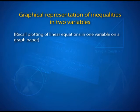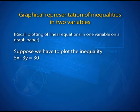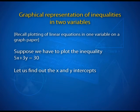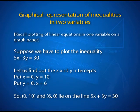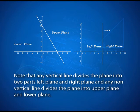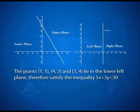Now let us represent linear inequalities in two variables graphically. Recall plotting a linear equation on a graph. For the equation 5x + 3y = 30, we find the x and y intercepts: when x = 0, y = 10; when y = 0, x = 6. So the points (0, 10) and (6, 0) lie on the line. Any vertical line divides the plane into a left and right part; any non-vertical line divides it into an upper and lower part. Considering points (1,1), (4,2), and (3,4), these lie in the lower left plane and satisfy 5x + 3y < 30.